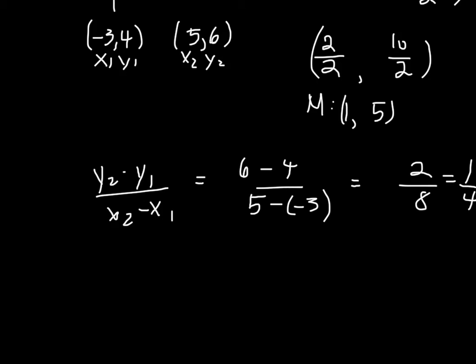Now this is the slope of AB. But we want something that's perpendicular to this, so we need to find the negative reciprocal. So the negative reciprocal of 1 over 4 is negative 4.